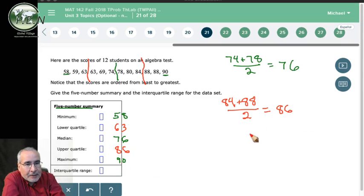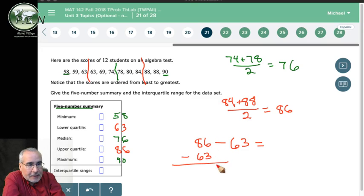There's our five number summary. Our interquartile range is going to be the upper quartile, 86, minus the lower quartile, 63. Maybe we'll do it this way. It's a little bit easier. 6 minus 3 is 3. It's 23.